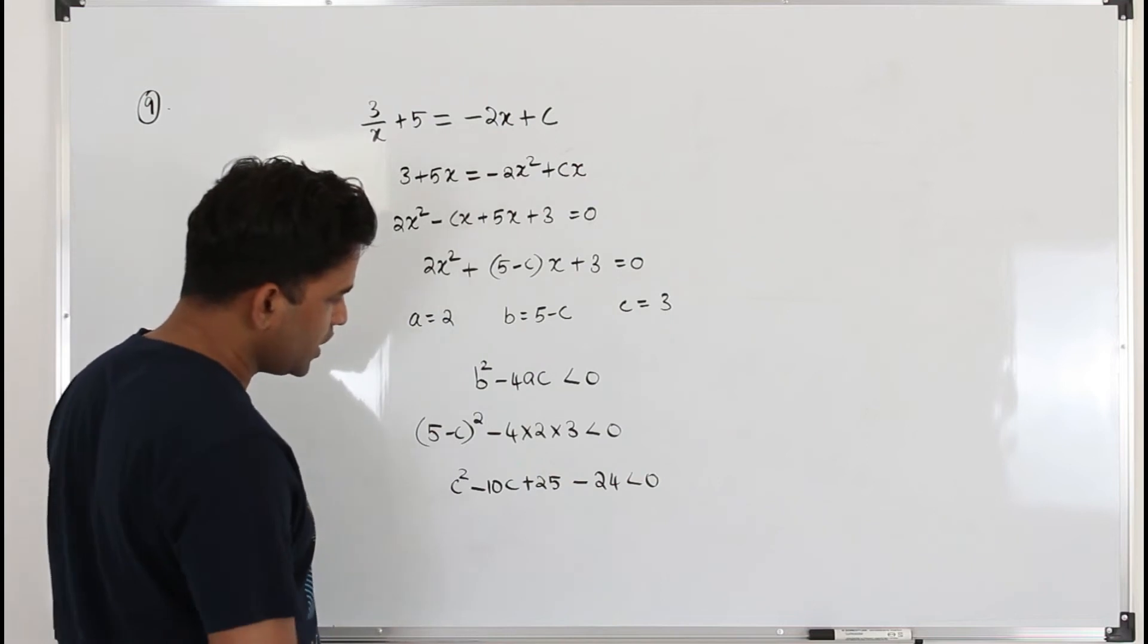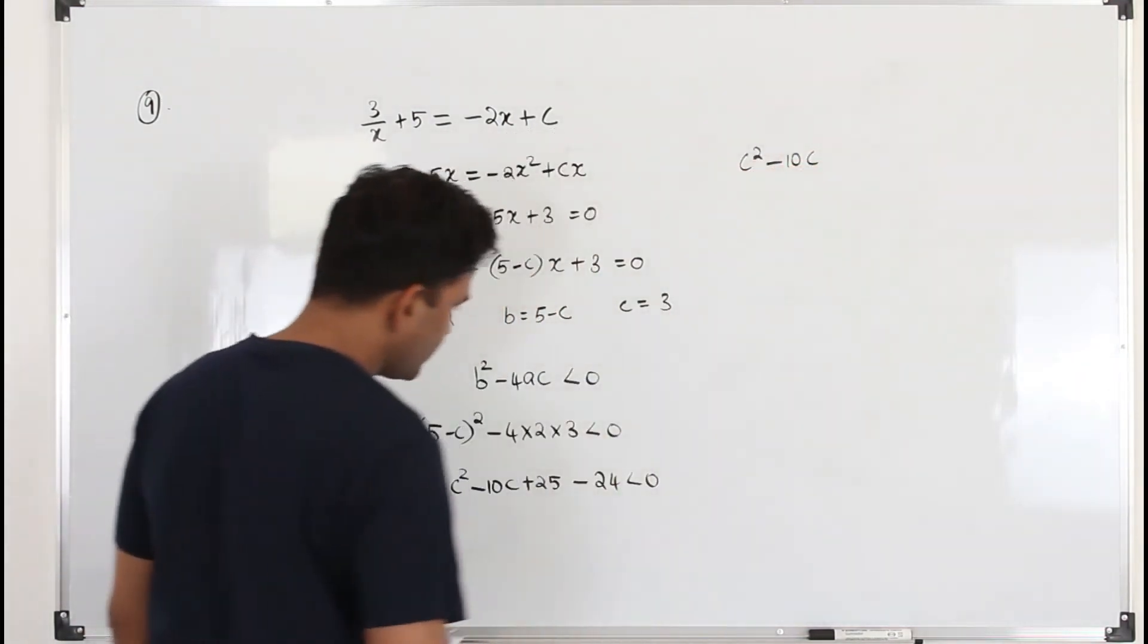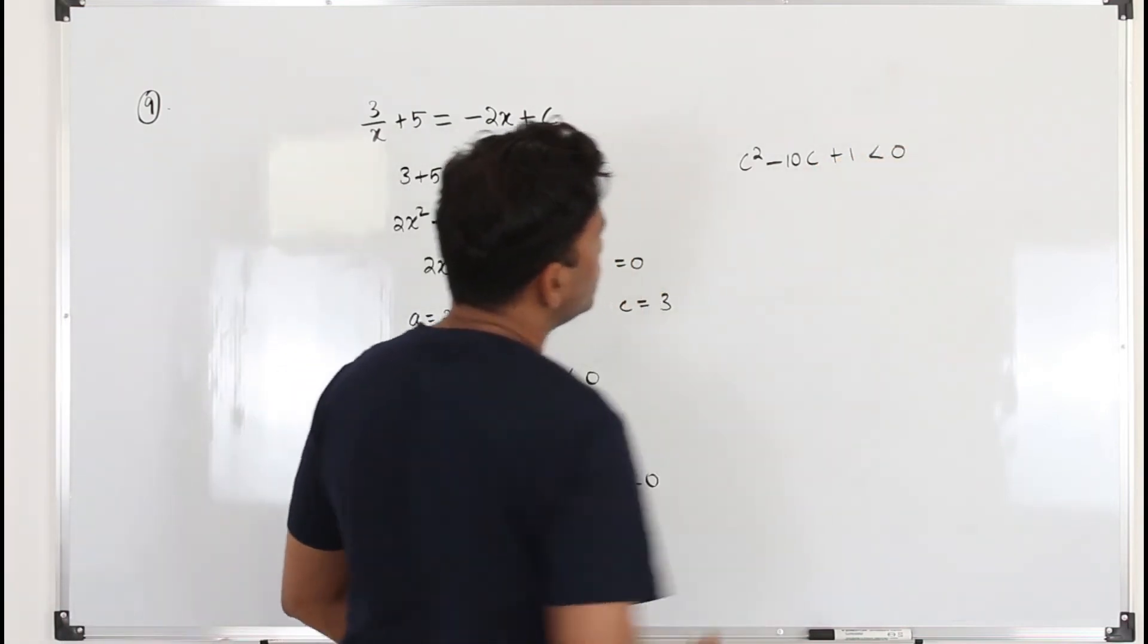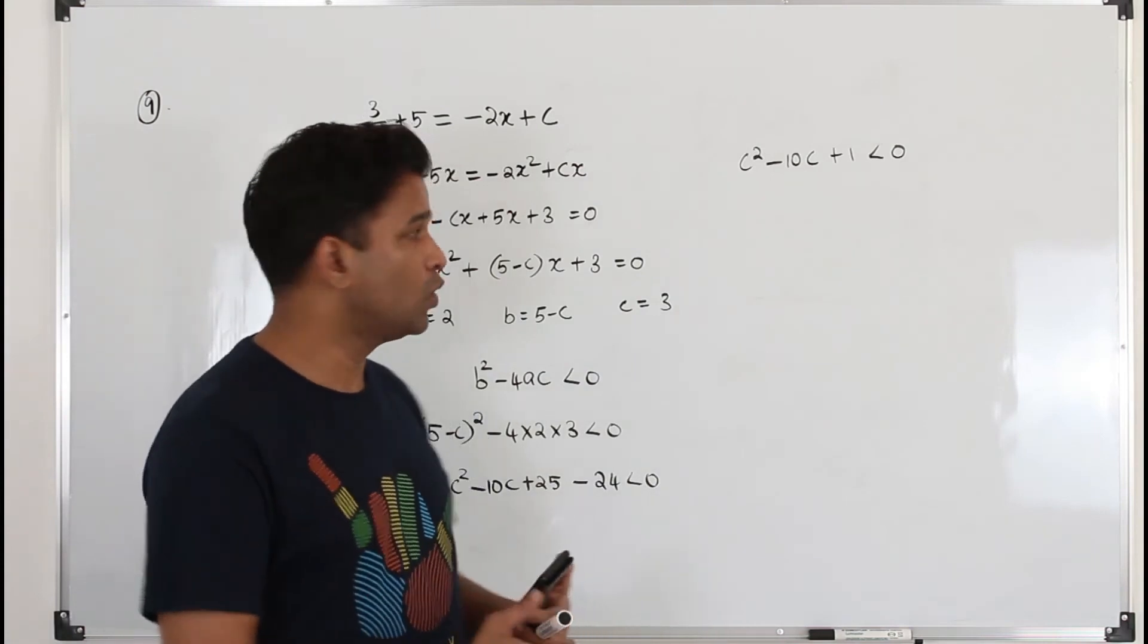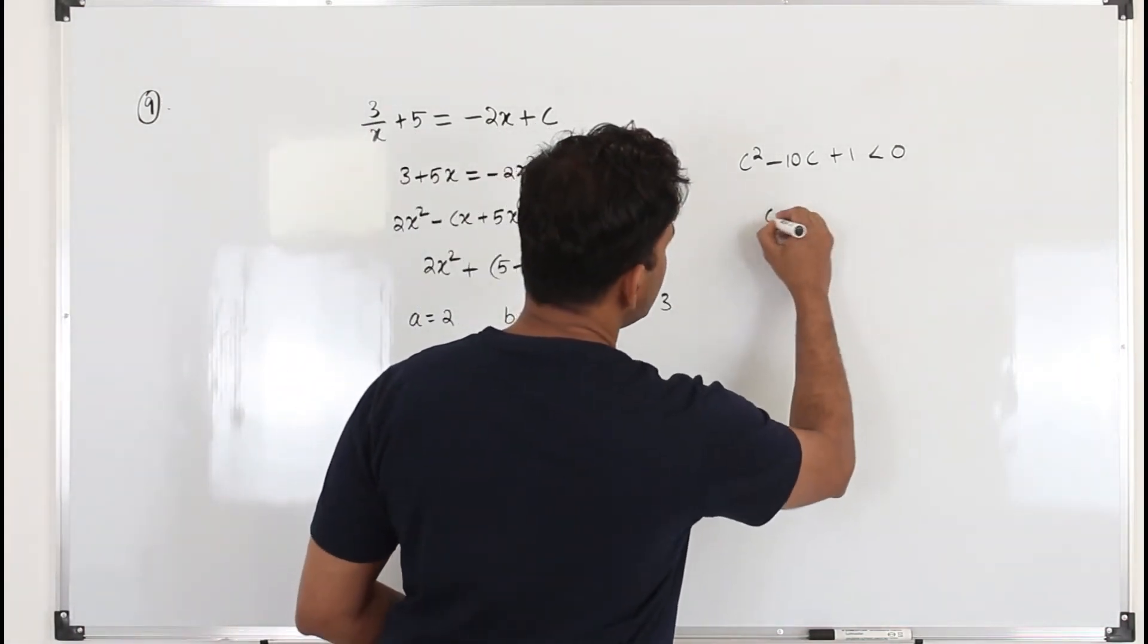So the quadratic equation here is c² - 10c + 1 is less than 0. So this is a quadratic inequality. To solve this quadratic inequality, first you need to find the two c values.